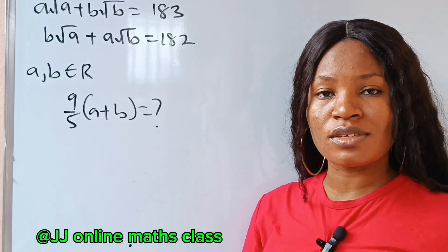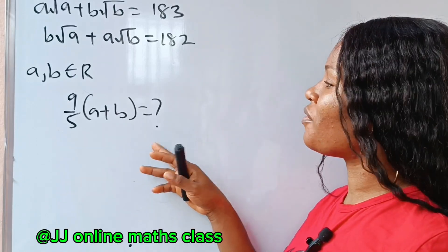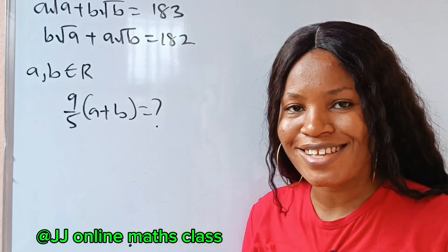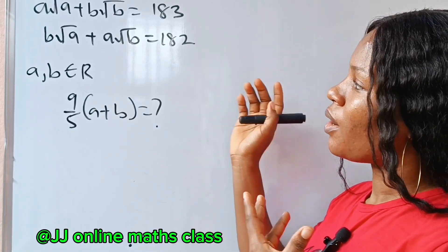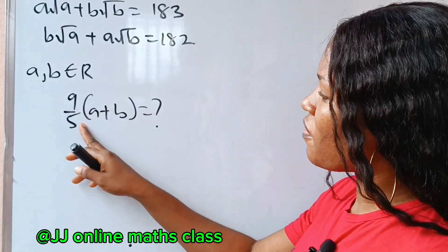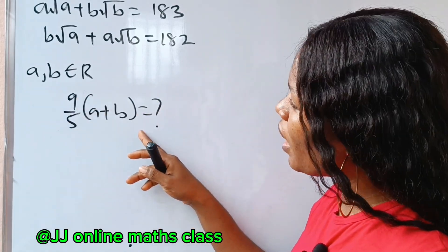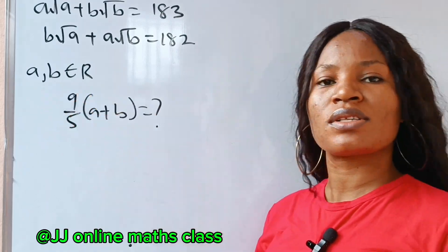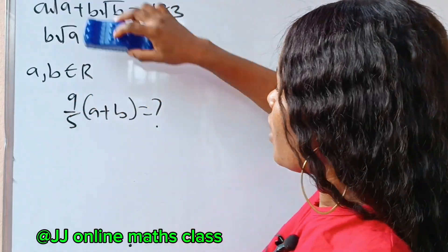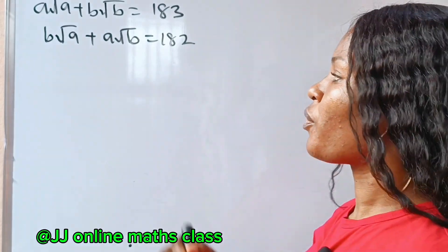The answer to this is 73. You can pause the video and see if you can get the solution to it. Let's get to the work. We are asked to solve for 9 over 5 multiplied by a plus b, and a and b are real numbers.